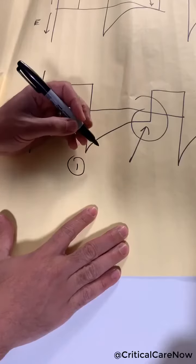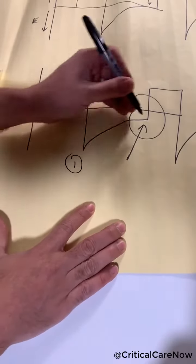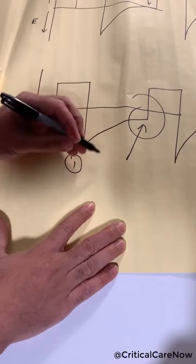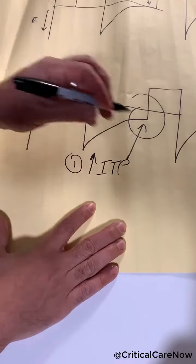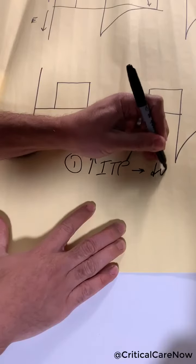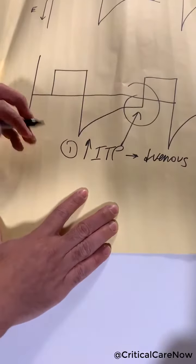The first problem it can cause is hemodynamic problems, because this causes overinflation of that lung, and now you have increased intrathoracic pressure. This increased pressure decreases venous return, which can lead to decreases in stroke volume and cardiac output.